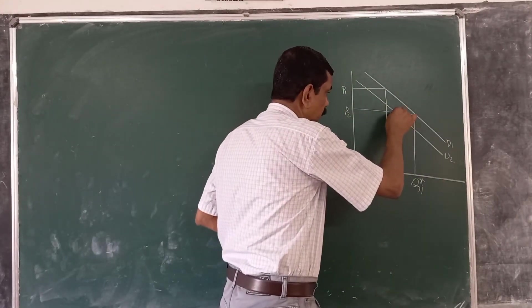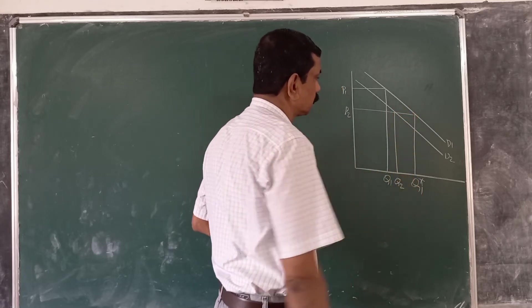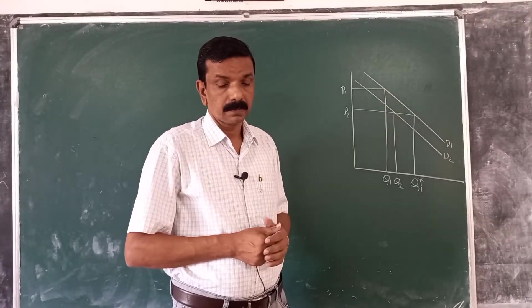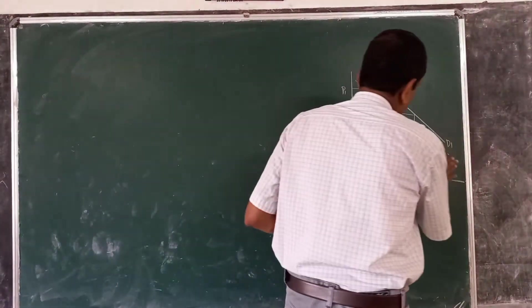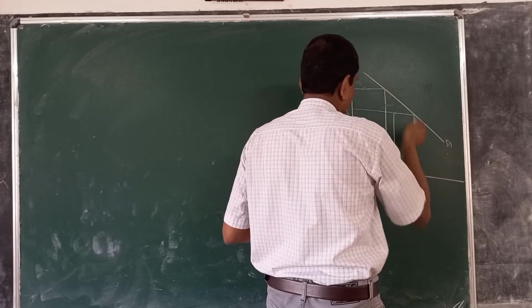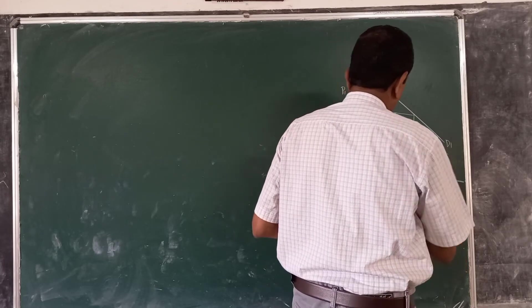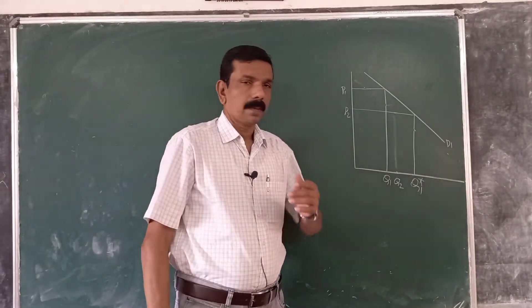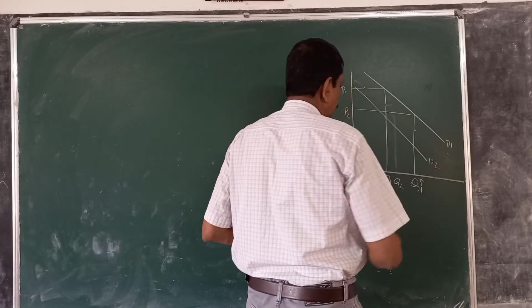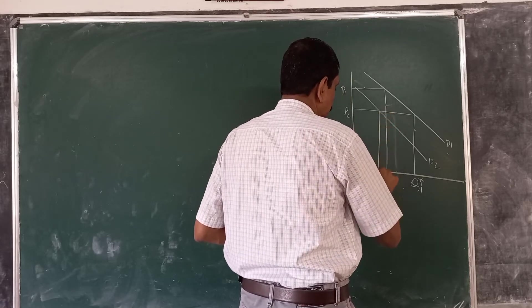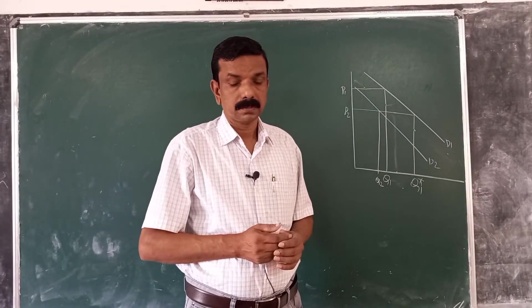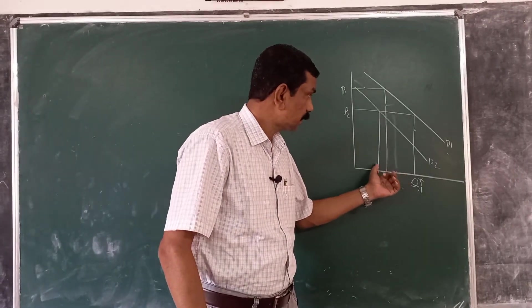So at price P2, the demand curve shifts towards the left from D1 to D2, and the actual quantity demanded decreases to Q2. From Q1, quantity demanded decreases to Q2.